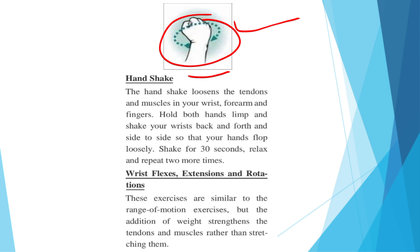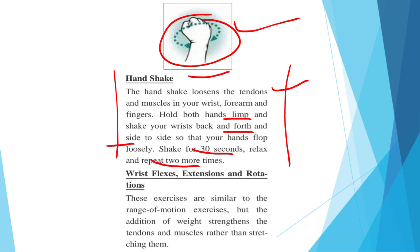The handshake exercise loosens the tendons and muscles in the wrist, forearm, and fingers. Hold both hands limp and shake your wrist back and forth and side to side. Shake for 30 seconds, then relax and repeat 2 more times.